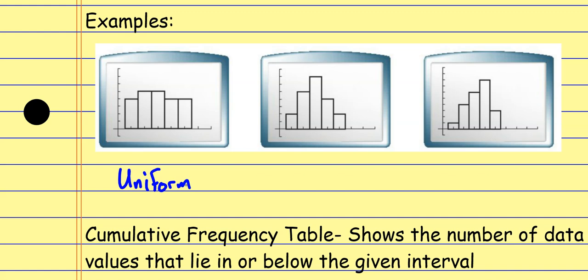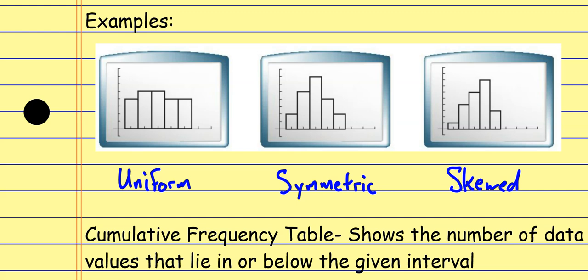The second example has a peak in the center with lower bars spreading out on each side. It's not perfectly symmetrical but in general looks fairly symmetrical, so we call it symmetric. The third example looks like the symmetric one except the high point is shifted off to one side — it grows like the symmetric one but shrinks more on one side — so this one is skewed.